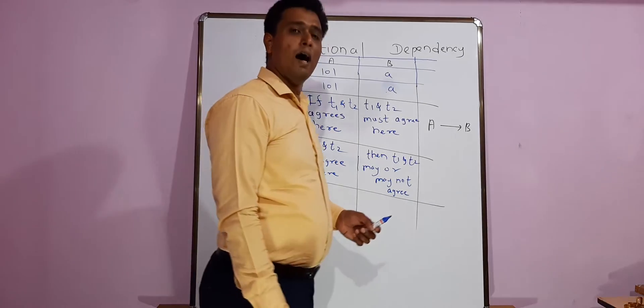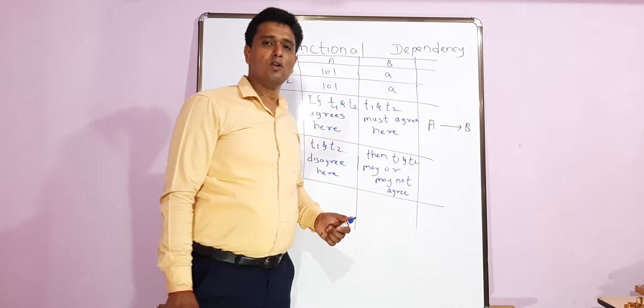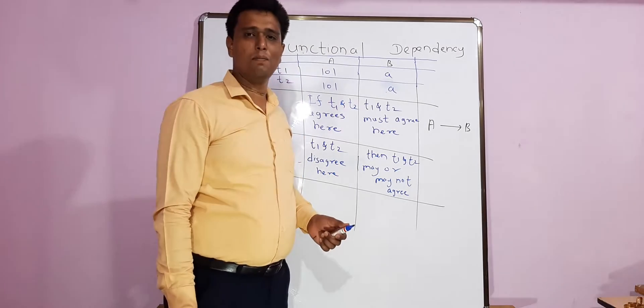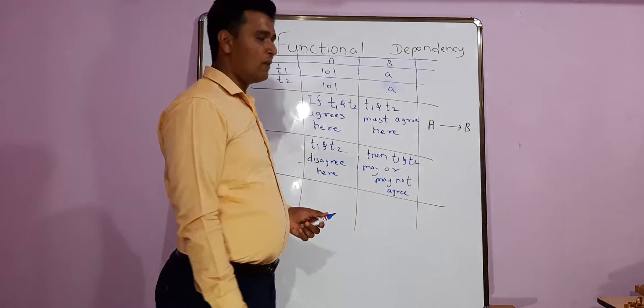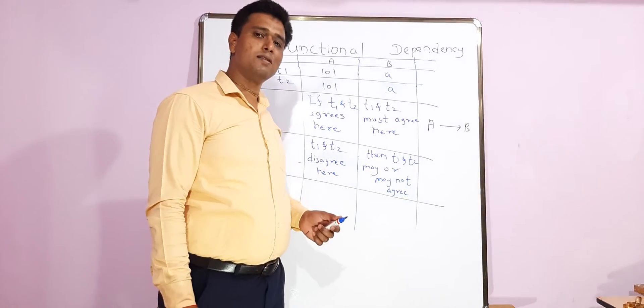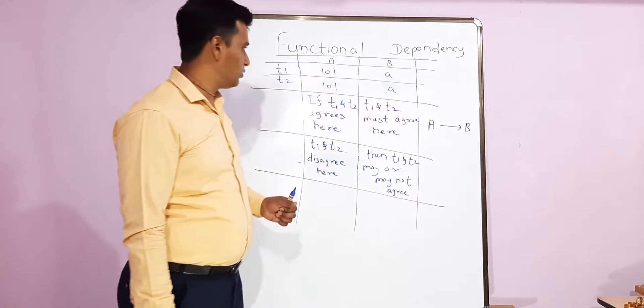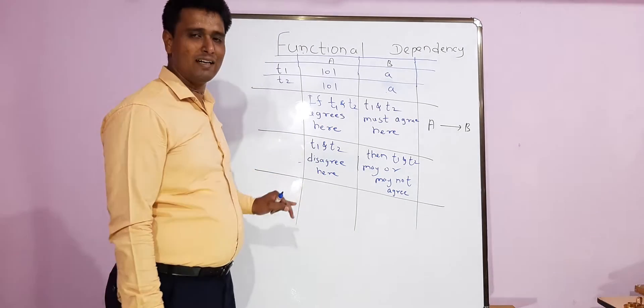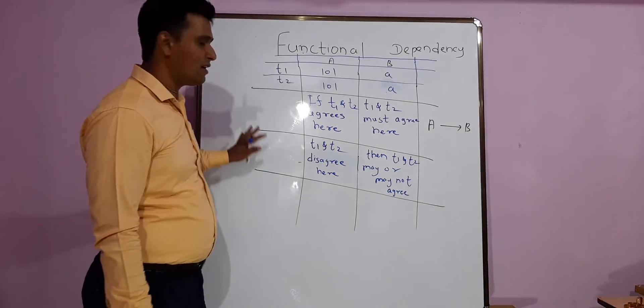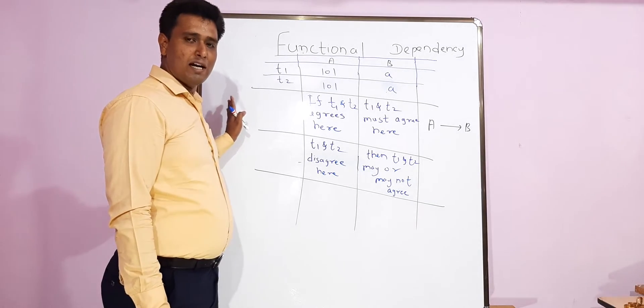Before this, the question is asked like this: you will be given a table and you have to find out the functional dependencies depending on the table. So how to identify the functional dependencies from a given table? I am going to tell you a very important, easy technique method.